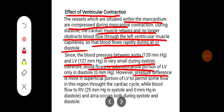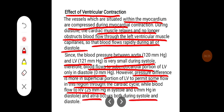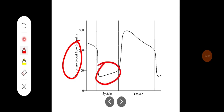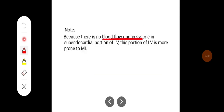The pressure difference is greater in the superficial portion of the left ventricle, permitting some flow in this region throughout the cardiac cycle, while blood flow to the right ventricle and atria occurs both during systole and diastole. Overall, coronary blood flow to the myocardium drastically decreases during systole and increases during diastole. Because there is no blood flow during systole in the sub-endocardial portion of the left ventricle, this region is more prone to myocardial infarction.